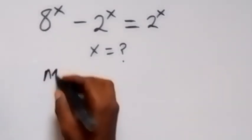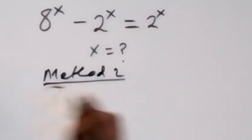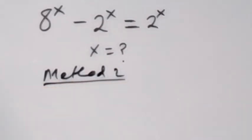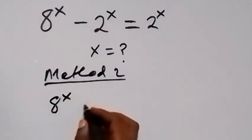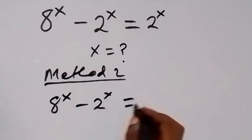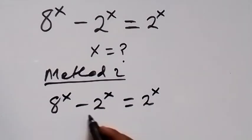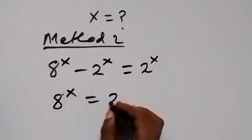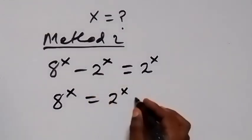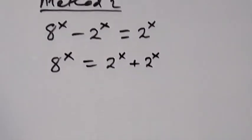Now let's look at method 2. We have 8 raised to power x minus 2 raised to power x equals 2 raised to power x. Let's take 2 raised to power x to the other side, and it becomes plus, so we have 8 raised to power x equals 2 raised to power x plus 2 raised to power x.